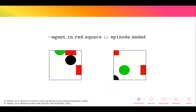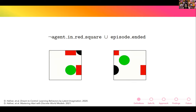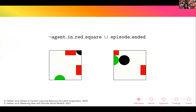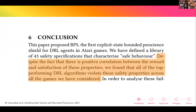Even with such a simple specification, many state-of-the-art agents — including the Dreamer agent released last year — still cannot satisfy these constraints even after 12 hours of training on a single GPU. This reflects work from the control and verification group at Oxford, which found that despite a positive correlation between reward and safety constraint satisfaction, top-performing deep RL agents frequently violate these safety properties.